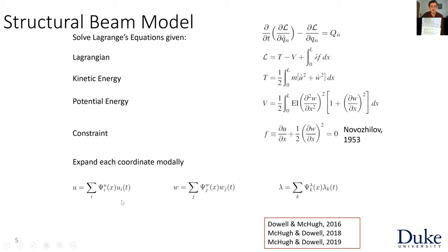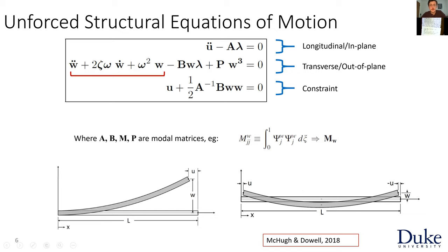What we're going to do is expand each coordinate modally — the U and W displacements are expanded into mode shapes and modal coordinates in time. The Lagrange multiplier lambda can be interpreted as the internal force required to keep the arc length constant, and it is also separated into X and T parts. This is just a separation of variables technique. When you put the modal equations into the potential energy, kinetic energy, and Lagrange multiplier, and then insert those into Lagrange's equations, you end up with three equations of motion.